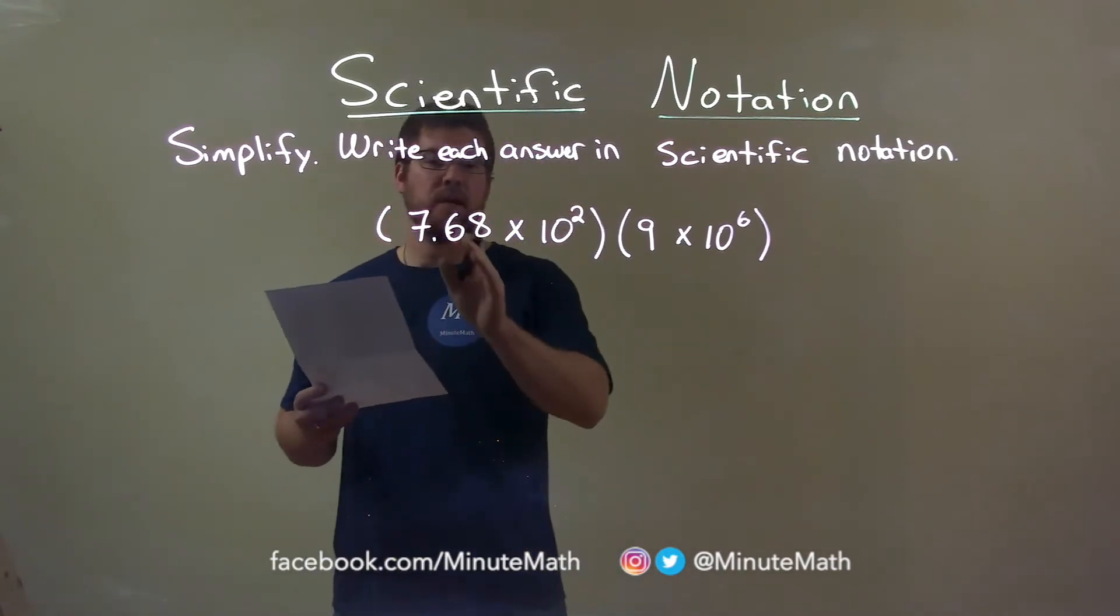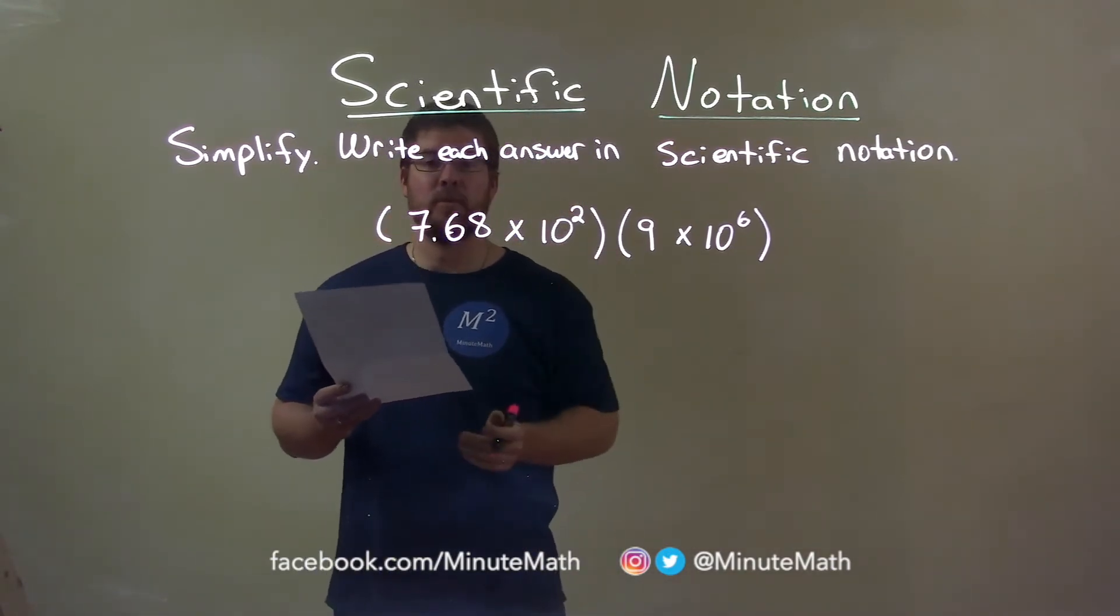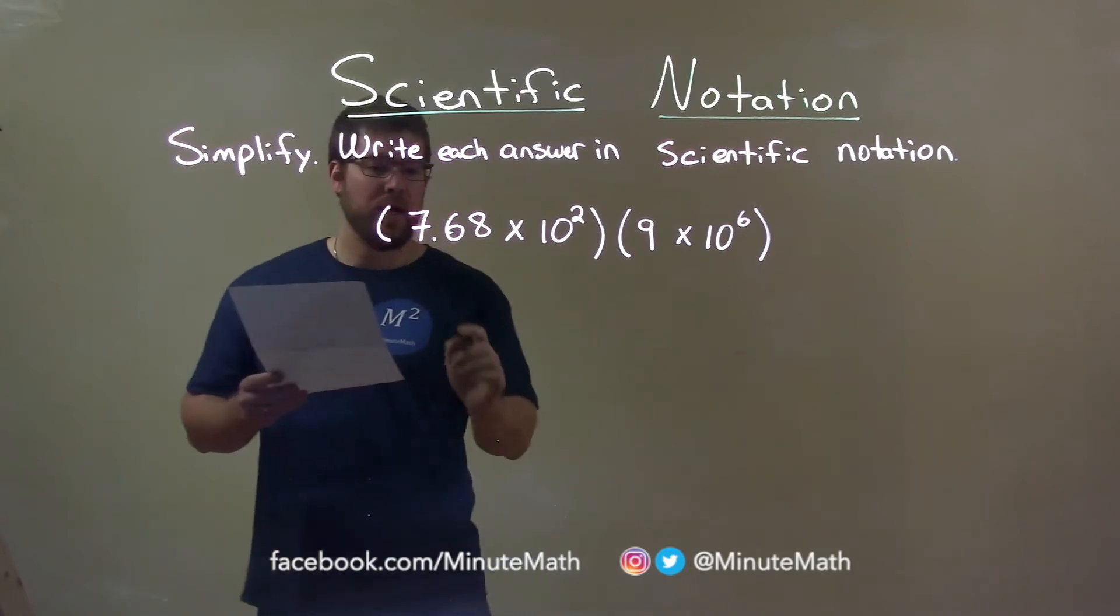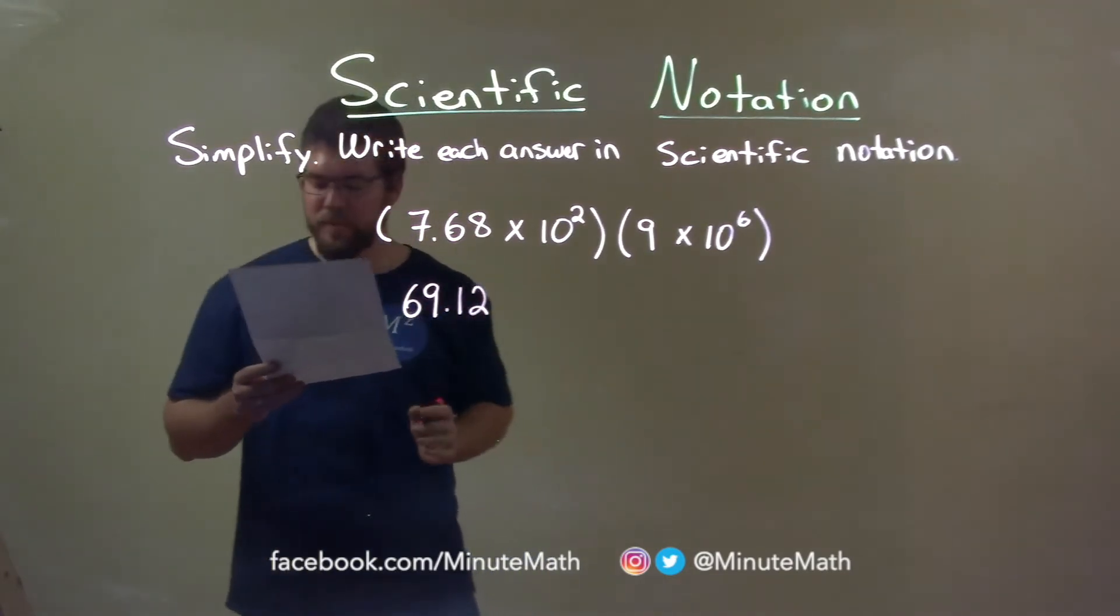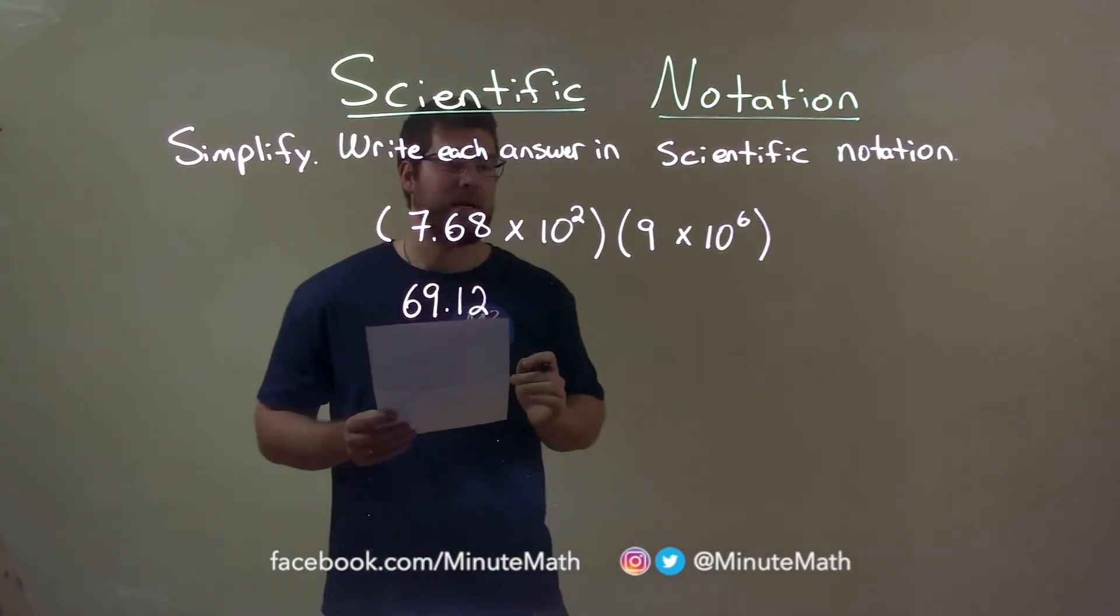First thing I want to do is take 7.68 and multiply that by 9. That comes out to be 69.12.